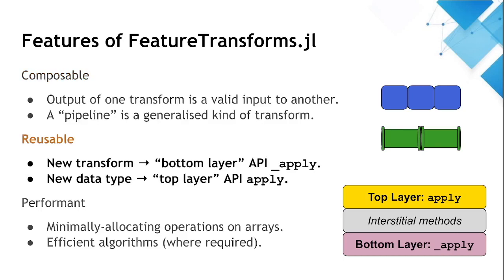To allow for reusability, we want some bottom layer API for supporting new transforms, and some top layer API for supporting new types, with some interstitial methods in between to keep the whole thing together. I'll note that feature transforms mainly supports arrays and tables, including data frames, keyed arrays, axis arrays, and we've also extended it for another of our packages, axis sets.